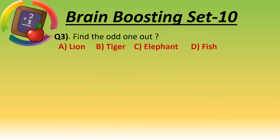Question number three: find the odd one out. Option A is lion, option B is tiger, option C is elephant, option D is fish. Think, children, think and tell me which is the odd one out.